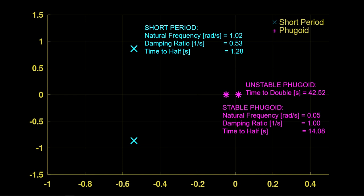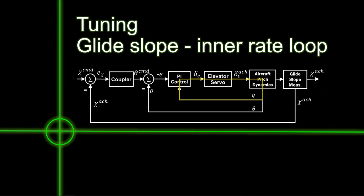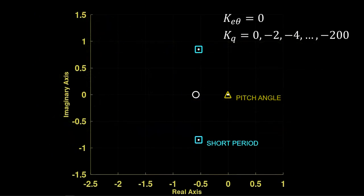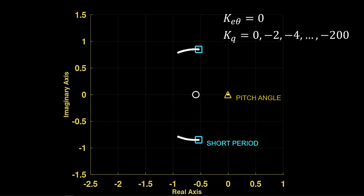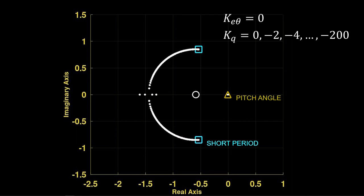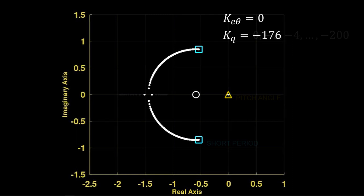It's time to tune. We start with the glide slope inner rate loop. As the pitch rate gain becomes more negative, we observe increasing damping of the short period. The pitch angle pole does not move, as the pitch error proportional gain is zero. We select a pitch rate gain of minus 176, which just critically damps the short period.